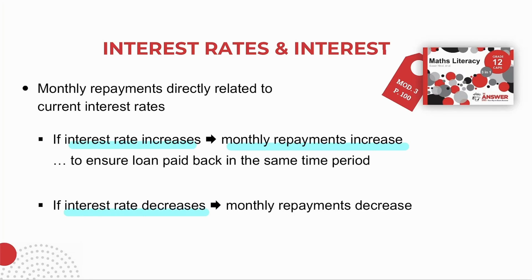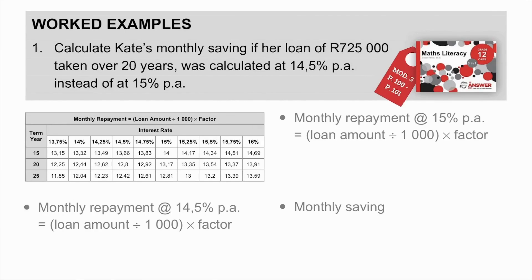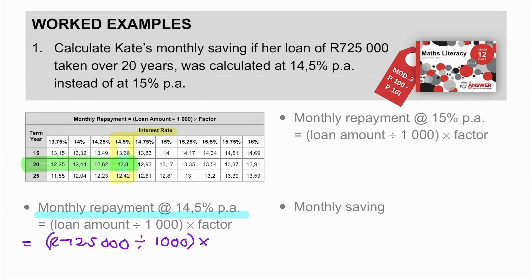Worked example: Calculate Kate's monthly saving if her loan of R725,000, taken over 20 years, was calculated at 14.5% per annum instead of 15% per annum. At 14.5% interest rate over 20 years, the factor from the table is 12.8. So: R725,000 divided by 1,000 times 12.8 gives a monthly repayment of R9,280 per month.